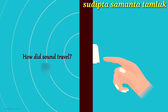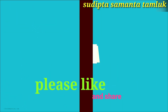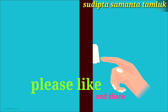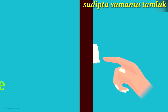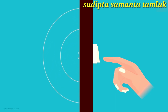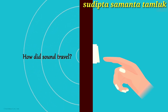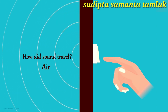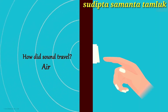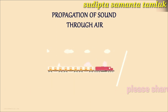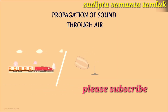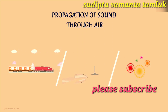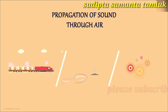Sound requires a medium for propagation. You know that someone is standing outside your door when you hear the doorbell. The sound of the doorbell travelled to you through air — here the medium of propagation is air. Sound of the siren when the train is approaching, sound of glass breaking, sound of a firecracker, are some examples where the medium of propagation is air.